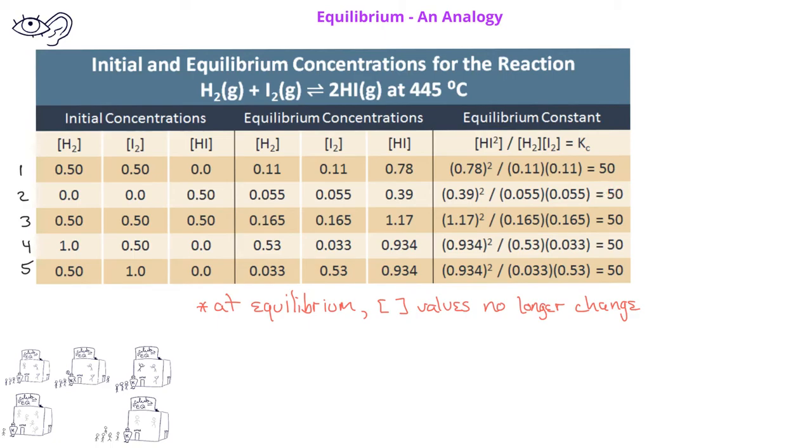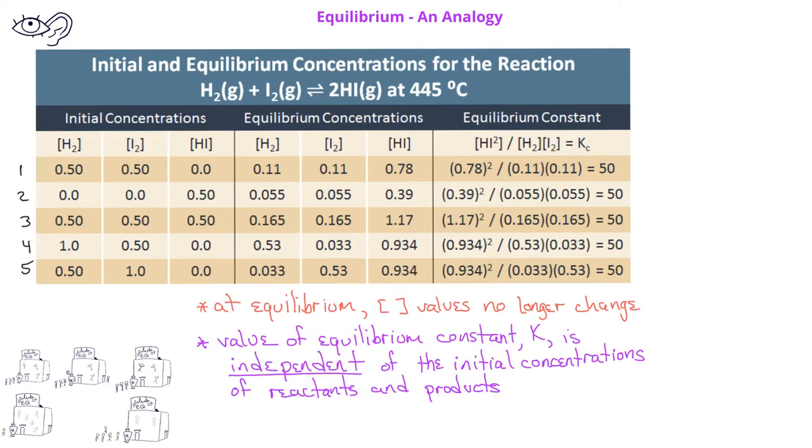We can do the same thing in the other three experiments, where we have some concentrations of hydrogen, iodine, and hydrogen iodide, but in each of those cases, when we reach equilibrium, in other words, when the concentrations have stopped changing, the equilibrium constant is always going to have the same value, no matter what the initial concentrations were.